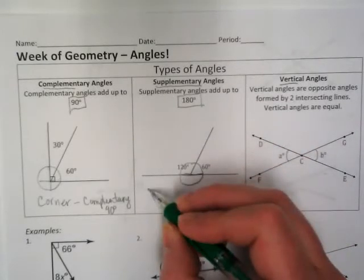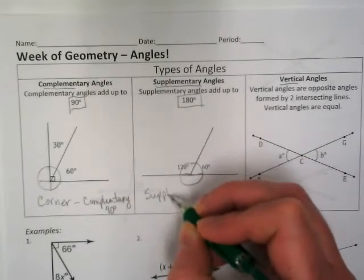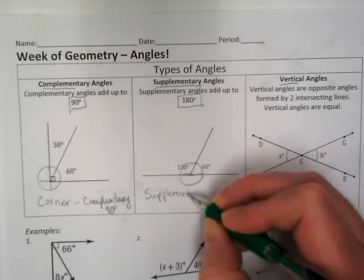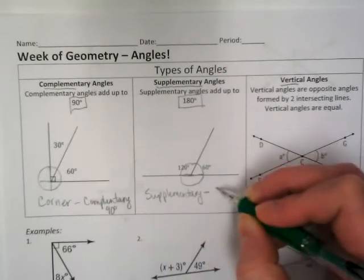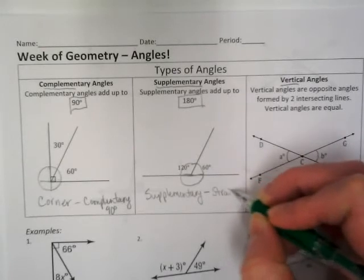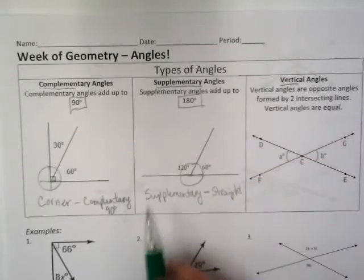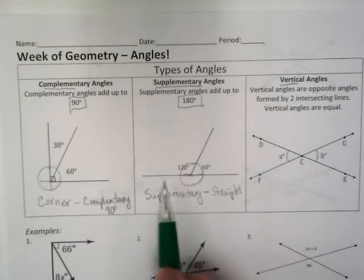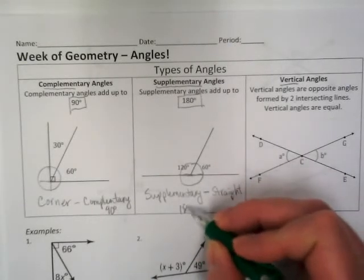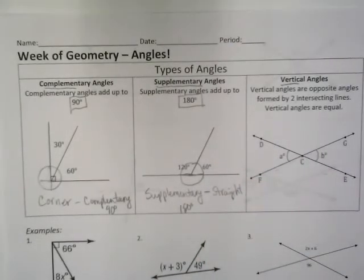But back to the vocabulary, I remember that supplementary starts with an S, and so does the word straight for straight line. So when I think supplementary, I think straight, and that equals 180 degrees. Why is that important?